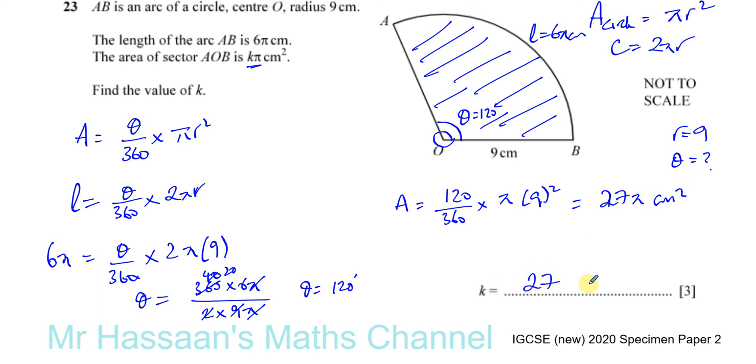In this question, we didn't have enough information to find the area on its own. They gave us the length of the arc, which helped us find the angle subtended by the arc, which is what we needed to find the area. I hope that was clear.